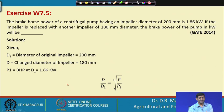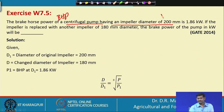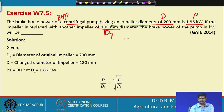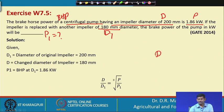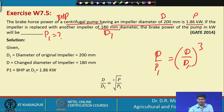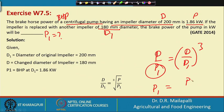The next example involves the brake horsepower of a centrifugal pump. The BHP of a centrifugal pump having a given impeller diameter D is 1.86 kilowatts (call this P). If the impeller is replaced with another impeller of diameter D1, what is the new brake horsepower P1? From the affinity laws: P / P1 = (D / D1)³.